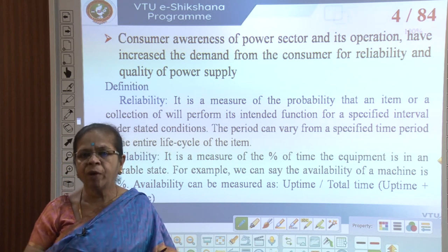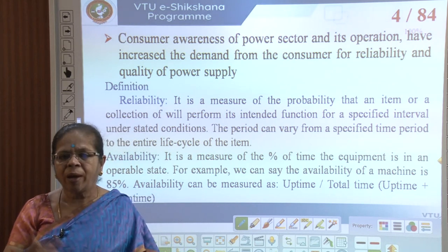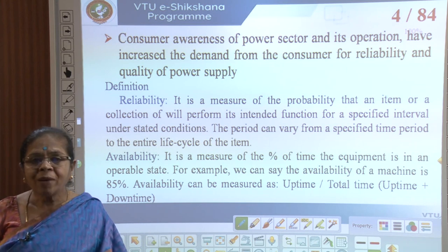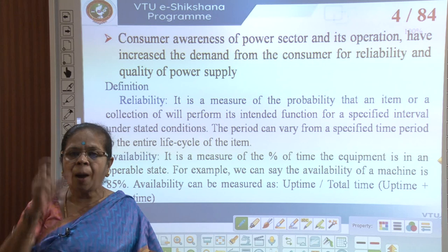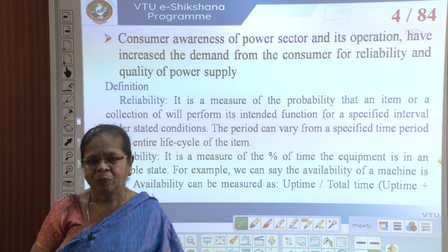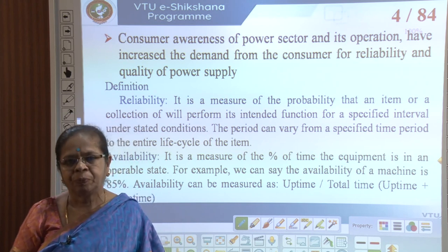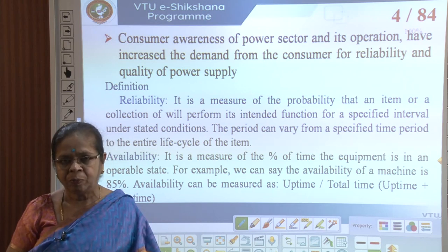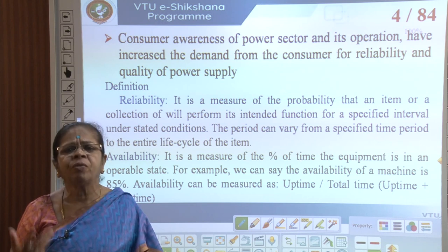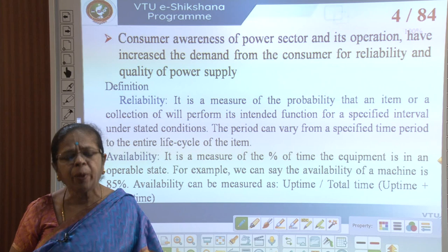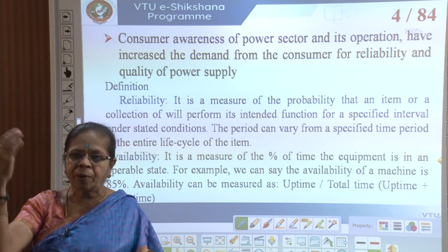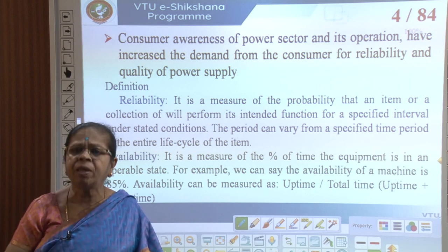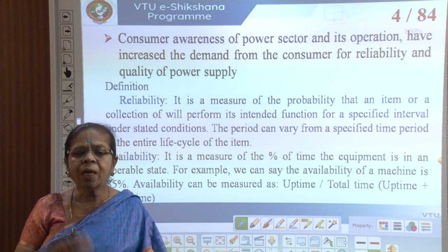Consider a car: you give it for servicing once in 6 months, so every 6 months it is not available for 1 or 2 days. Availability percentage is measured as uptime divided by total time, where total time is uptime plus downtime. The downtime could be due to a fault, a repair, or scheduled maintenance — for example, periodically removing a transmission line from service for maintenance.